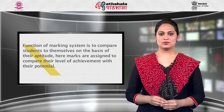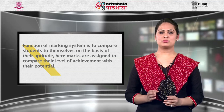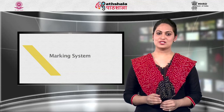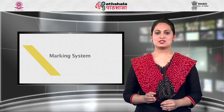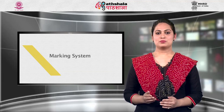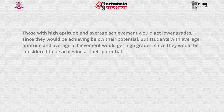Another function of the marking system is to compare students to themselves on the basis of their aptitude. Marks are assigned to compare the level of achievement with their potential. Students with high potential score high marks because they are achieving at their potential. Those with high aptitude but average achievement would get lower grades since they are achieving below their potential. Students with average aptitude and average achievement would get high grades since they are considered to be achieving at their potential.